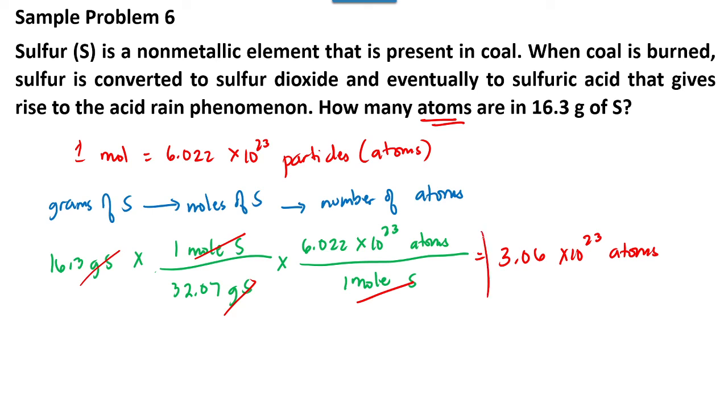Okay, so this is the answer. So if you encounter this kind of problem, you use the Avogadro's number. Just remember: 6.022 times 10 to the 23rd power for every one mole. Okay, that's it for sample number six.